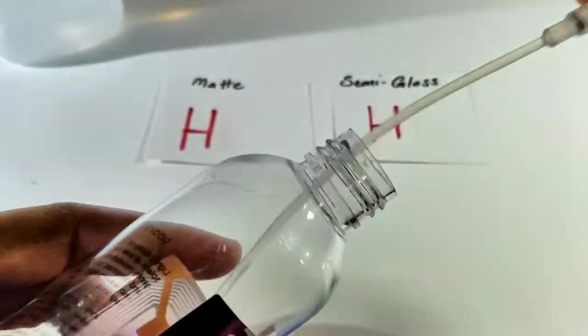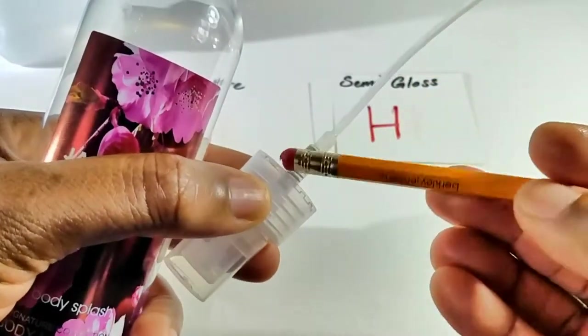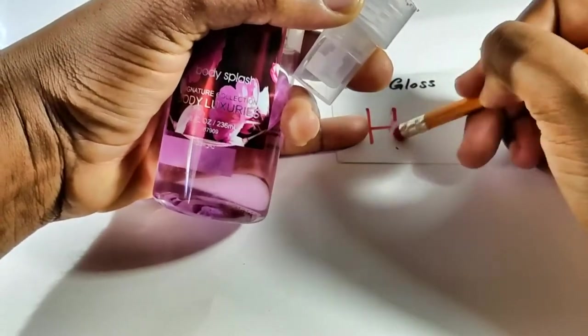Okay, so we're going to start things off with our body splash. Yes, I did say body splash. Because it's alcohol-based, we can definitely use it to erase your marker. You only need a small amount and patience.